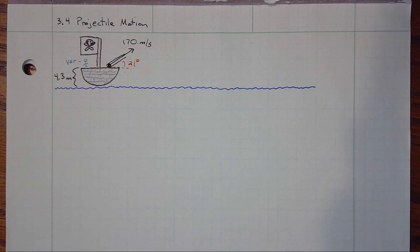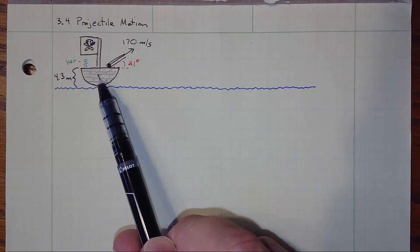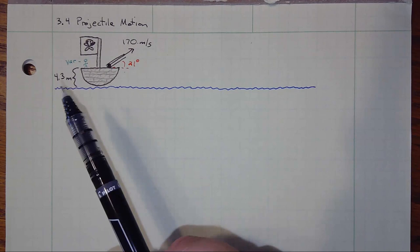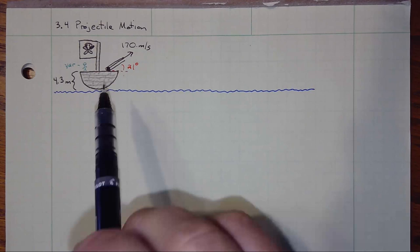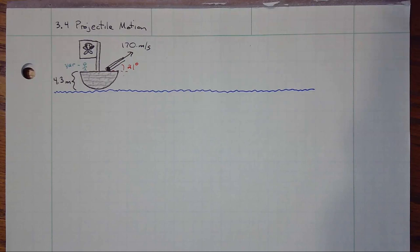Let's work through another one. Let's keep on the pirate theme and do a projectile motion problem. We have a cannonball that is going to be fired from the deck of this pirate ship. This is our object, which we'll take to be a point object. It is being fired at an angle of 21 degrees above the horizontal at an initial launch speed of 170 meters per second.